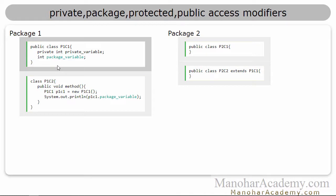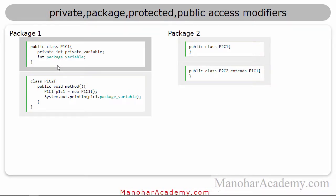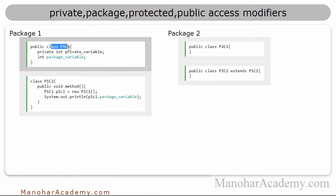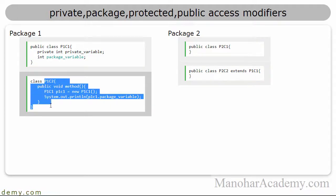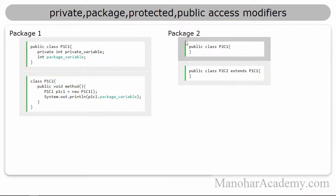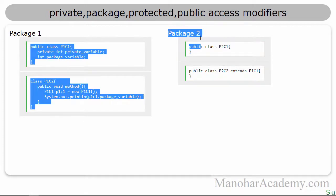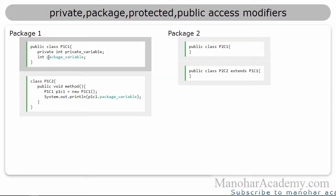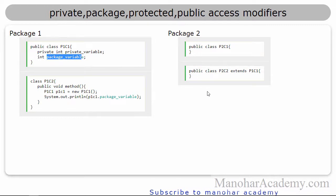Next, the package level fields and package level methods are accessible inside the class as well as other classes in the same package. They are not accessible outside the package. So because of that, in package two, they are not visible — this particular variable is not visible in package two at all.